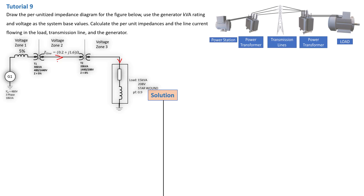And then we need to know the current flowing in the transmission line and the current flowing out of the generator. But in order to determine those currents, you first have to determine all the per unit values, and that's what we did in the previous tutorial, part 1. If you haven't watched that tutorial yet, there is a link in the description box.